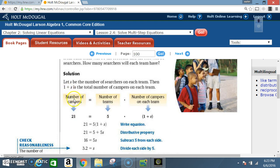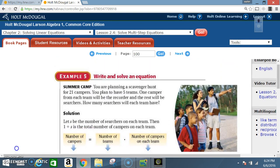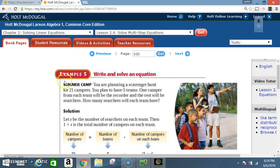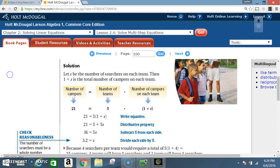So we're going to follow this equation: number of campers equals number of teams times number of campers on each team. Number of campers was 21, they gave us that in the problem. Number of teams, they said they wanted five teams.